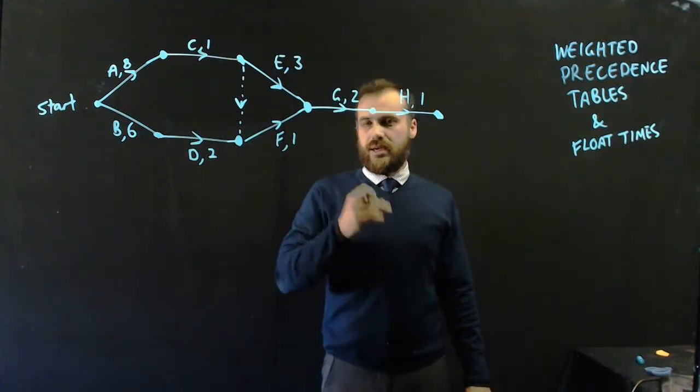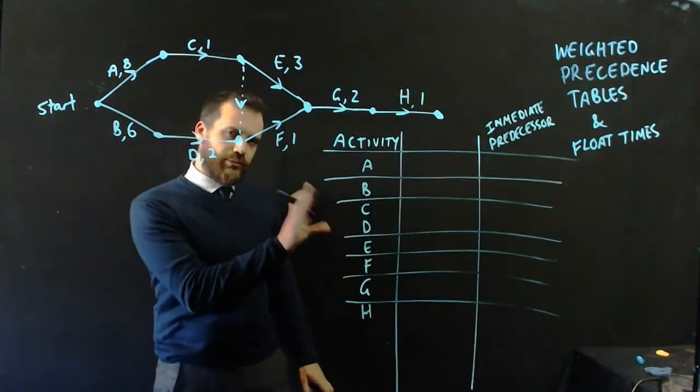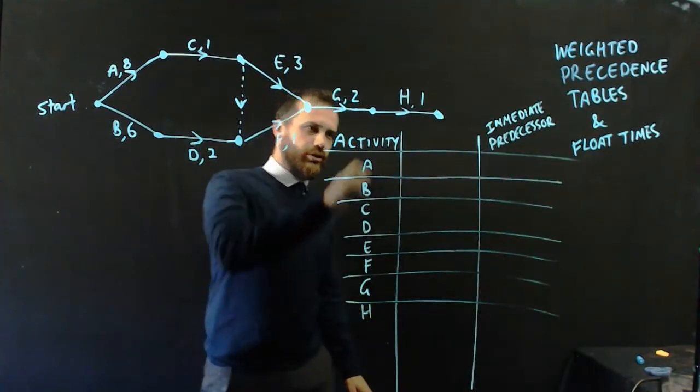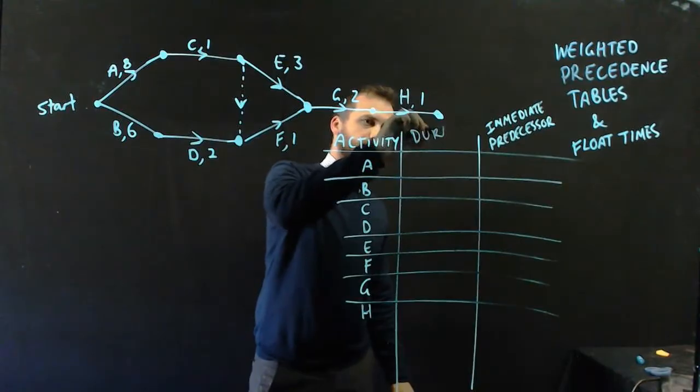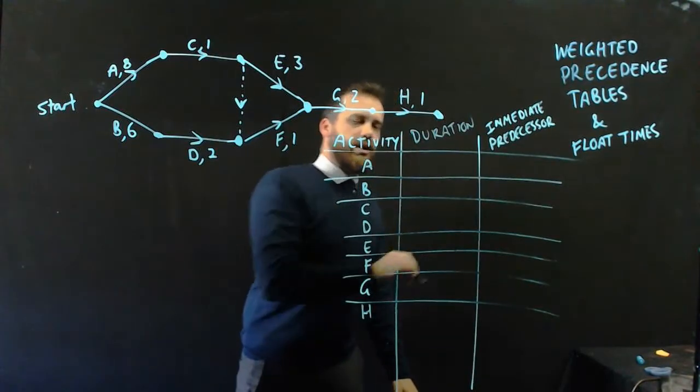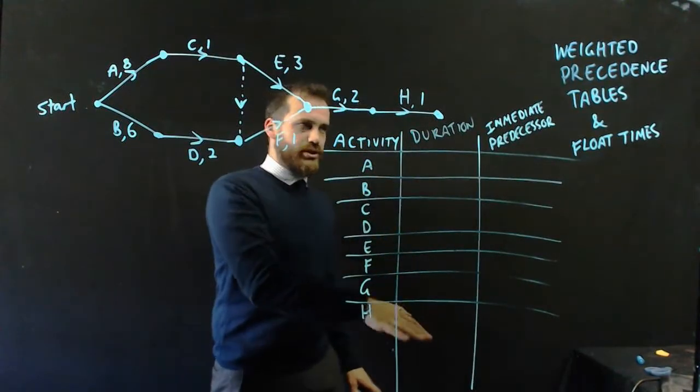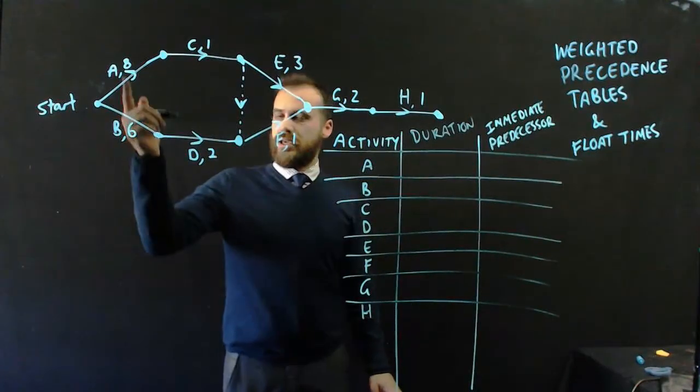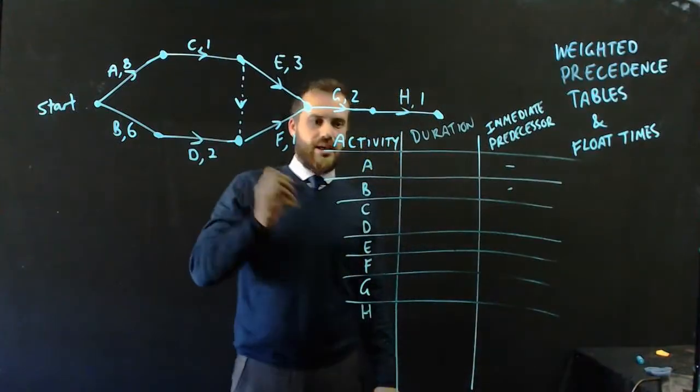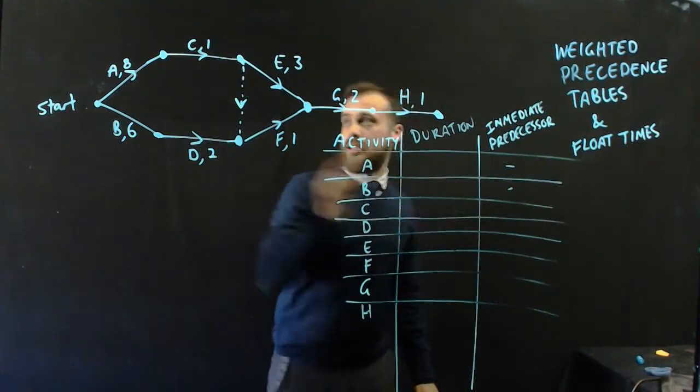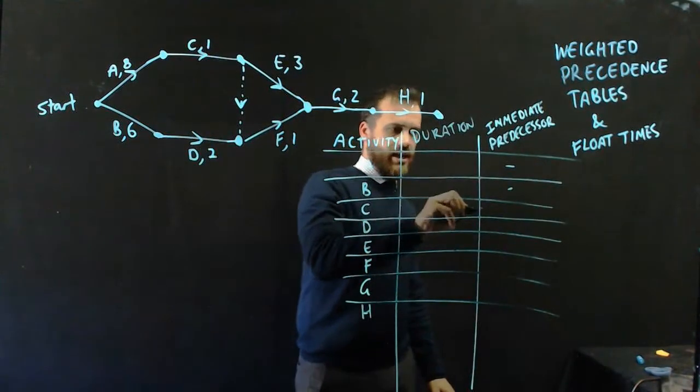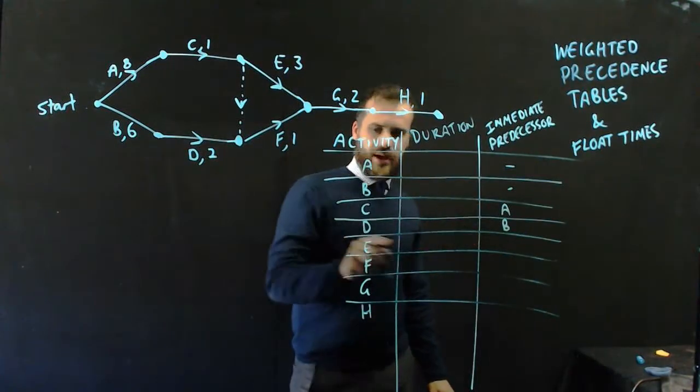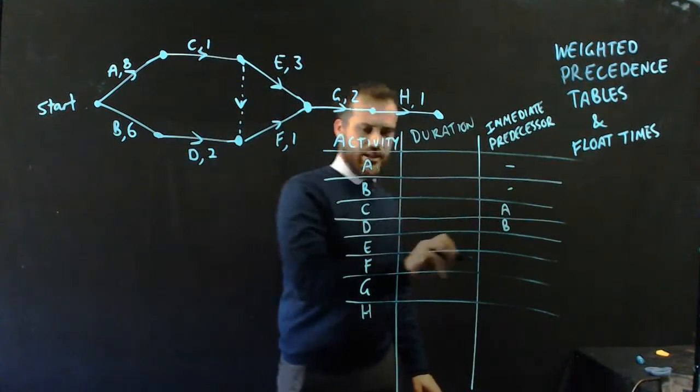Now, we're going to create a precedence table. So you should be familiar with these, but I've put another extra column in the middle. Now, that column is going to count for something called duration. I'm going to ignore that middle column for a second, I'm just going to finish doing my immediate predecessors. So A and B are at the start, so they have no immediate predecessors. C has an immediate predecessor of A. D has an immediate predecessor of B.